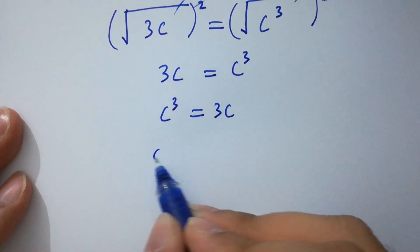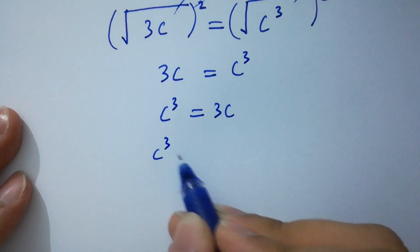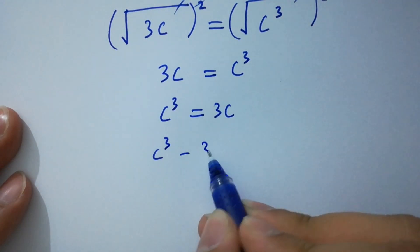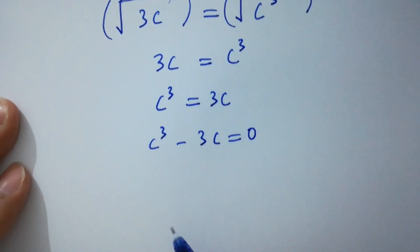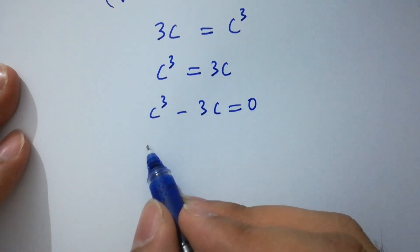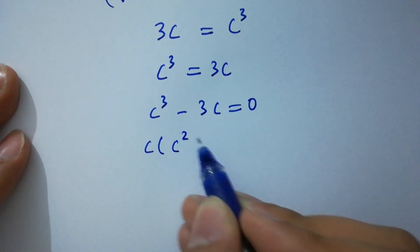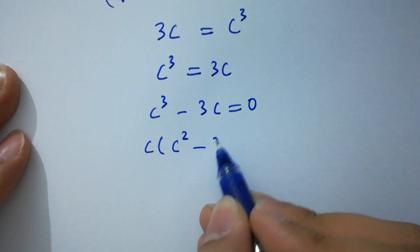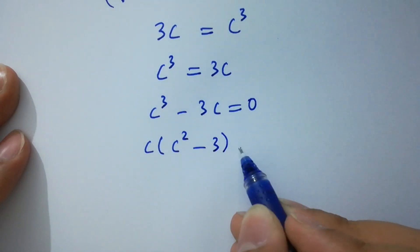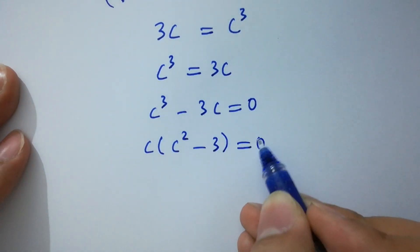So c cubed minus 3c equal to 0. Taking c as common, we have c times (c squared minus 3) equal to 0.